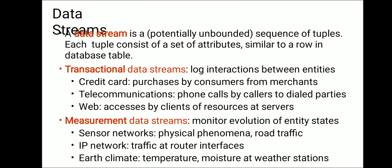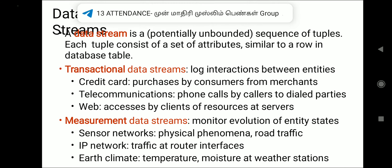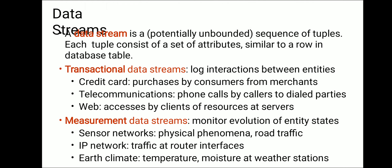Measurement data streams monitor the evolution of entity states. We don't use all the data currently — even though it is being generated continuously, at a specific point in time we record and check whether there is any change in the measurement. In a sensor network, if there is any alert, a continuous query is generated. Examples include sensor networks, physical phenomena, road traffic, IP network traffic and router interfaces, temperature, near-to-earth climate, and moisture to other stations.